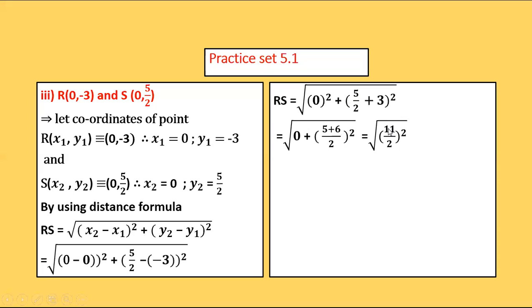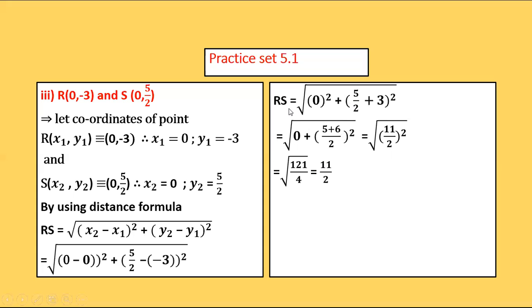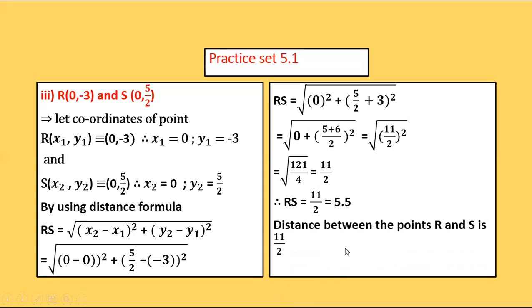RS = √[(5/2 + 3)²] = √[(11/2)²] = 11/2. Therefore the distance between points R and S is 11/2.